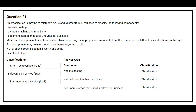Question number 21. An organization is moving to Microsoft Azure and Microsoft 365. You need to classify the following components: web hosting, a virtual machine that runs Linux, and document storage that uses OneDrive for Business. Match each component to its classification.